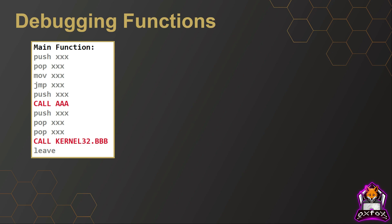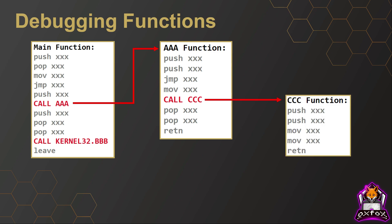Code we would be interested in analyzing would be a function written by the malware author. In this example, let's pretend the function named AAA has been written by the malware author and we want to investigate it further. In x32dbg there are two instructions you'll use: step over and step into. If my instruction pointer — the pointer to the next assembly instruction that will execute — is set to call AAA, I could either step over or step into it. If I step over, the function will still execute but I won't see the instructions that ran. If I use step into, I'll jump to the address space where the function begins and see its content. Within that function there may be more functions; for example, I could step into a triple-C function and again jump to a new address space where that function begins.